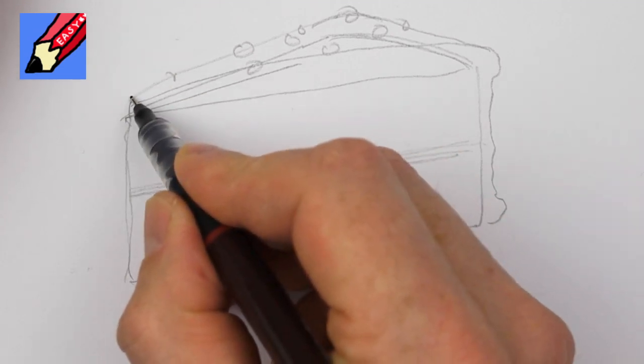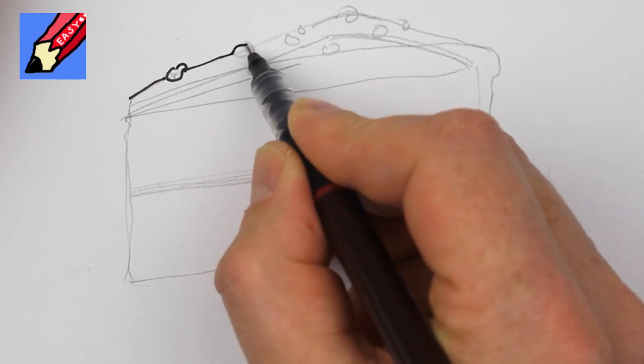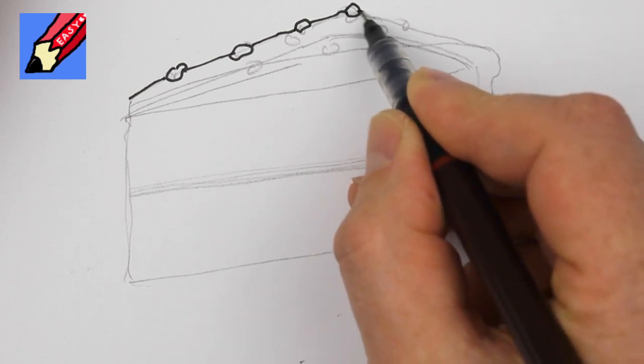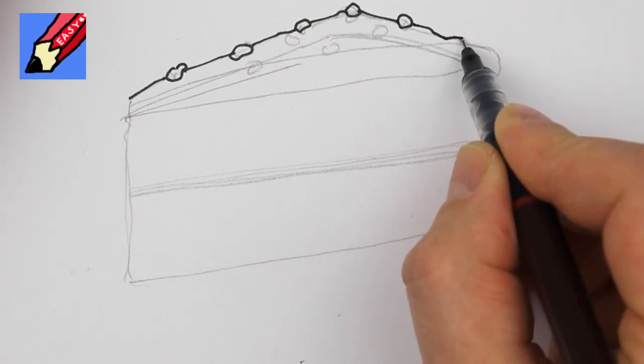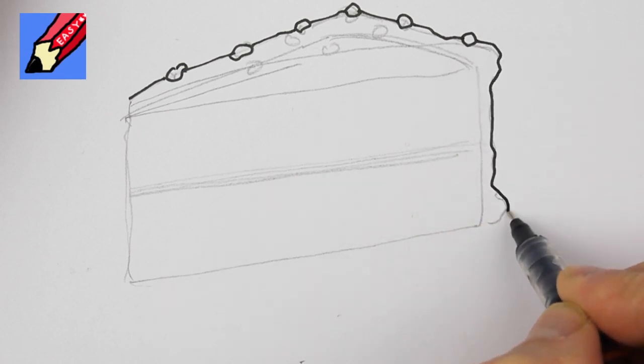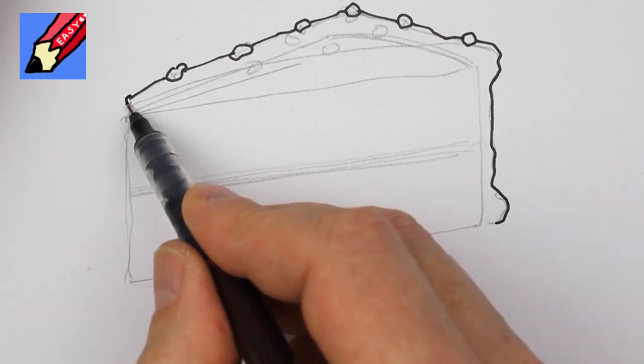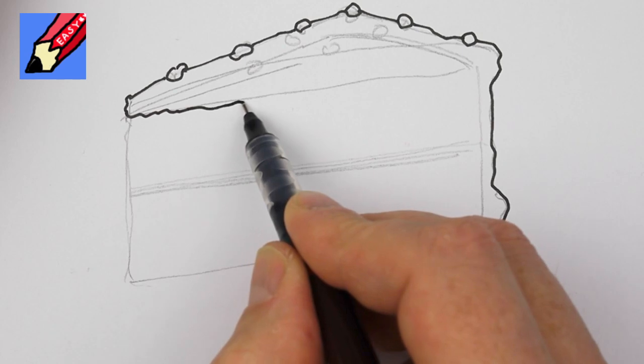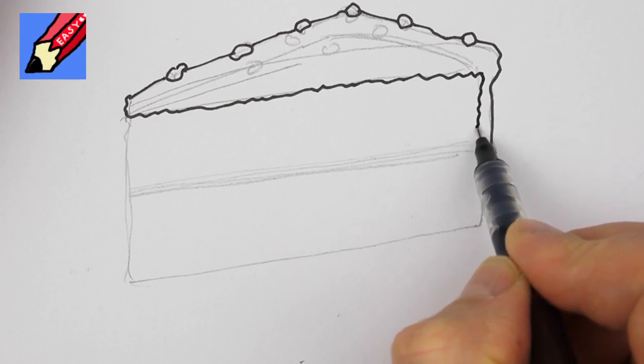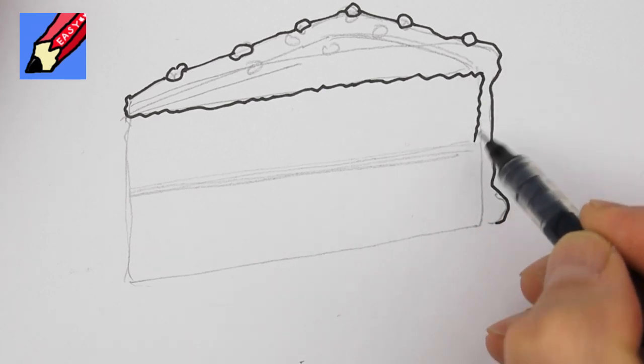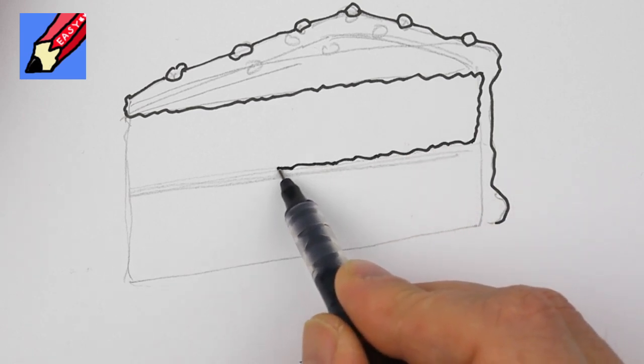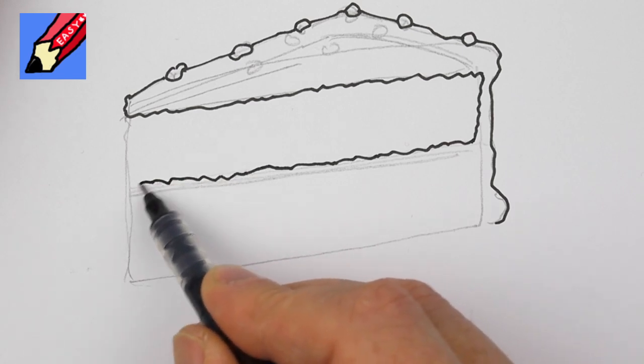Now come here and we'll draw that sort of nuts bit. Some will be sticking up on the top like that and then this will be the kind of frosting around the edge and here where it joins the cake is going to be quite crumbly and the cake will come in slightly there and again we want a crumbly kind of edge like that.